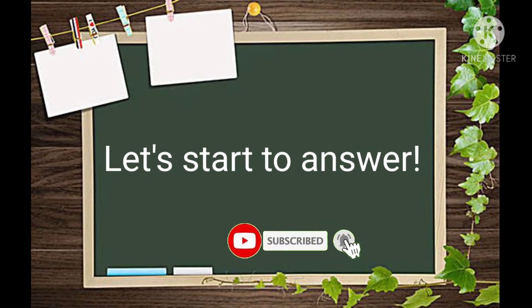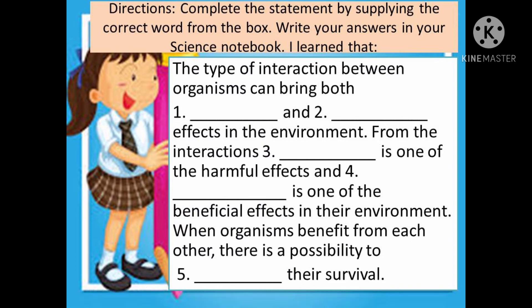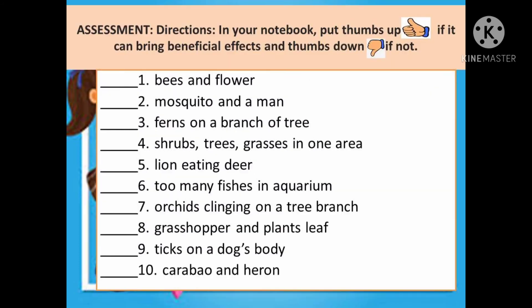Get your module and let's start to answer. In this test, complete the statement by supplying the correct word from the box, and write your answers in your science notebook. Choices can be found in your module. Activity number two: infer the possible effects of each interaction in the environment. For your assessment, in your notebook, put a thumbs up if the interaction brings beneficial effects and a thumbs down if not.